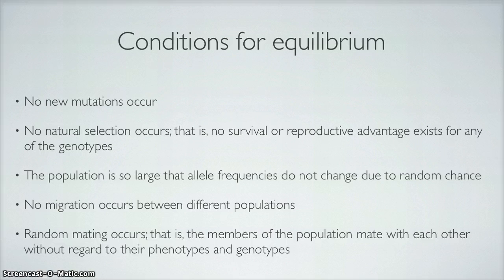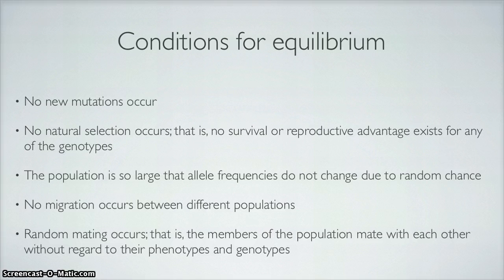The conditions for Hardy-Weinberg equilibrium include: no natural selection — this doesn't happen; no survival or reproductive advantages for any genotypes — also not true; the population is so large that allele frequencies do not change due to random chance — we cannot be sure of this; and no migration occurs between different populations — this does happen. For example, when people from a population like Votek go off to college out of state, that creates a different population, changing allele frequencies right there.